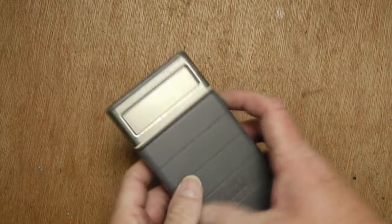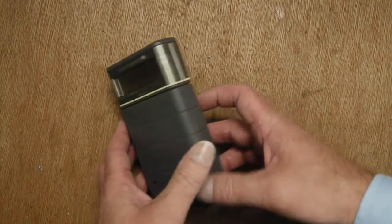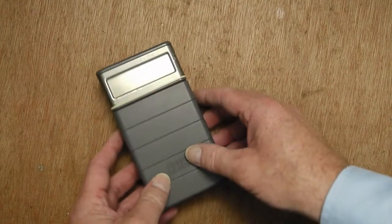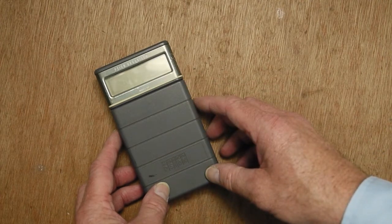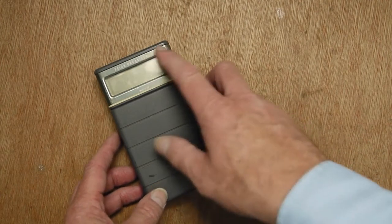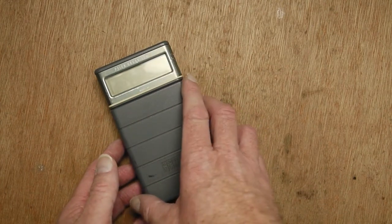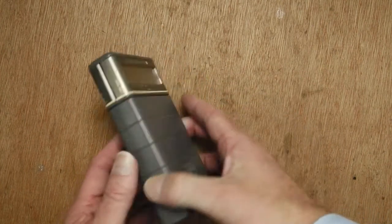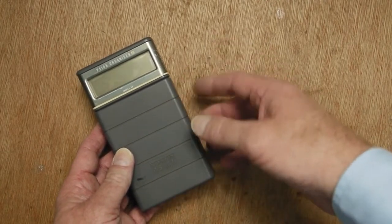This is a Psion Organiser 2. It's an organizer made by Psion that came out in the 80s. It is the second version of Organiser in this form factor. There was an Organiser 1, which was called the Organiser at the time. It's very similar, it's a different color, it's black instead of grey and there's a few differences in the way it operates.